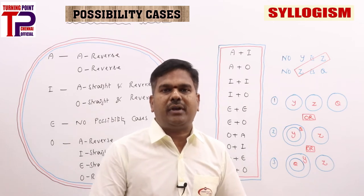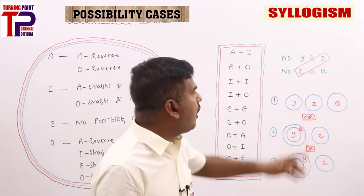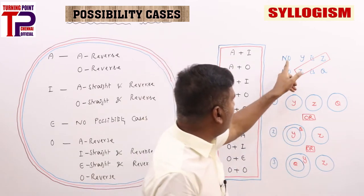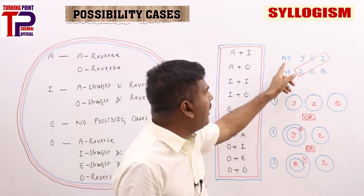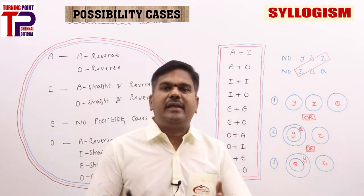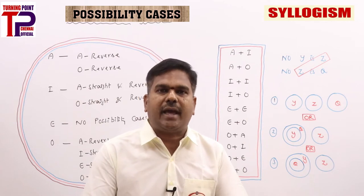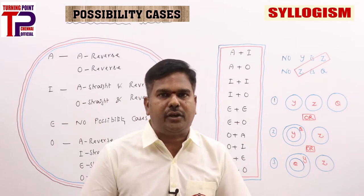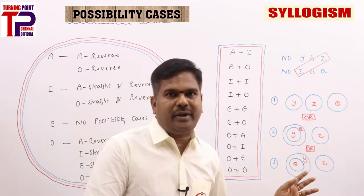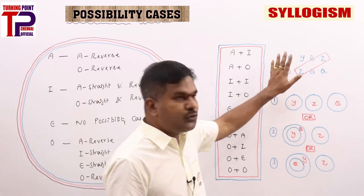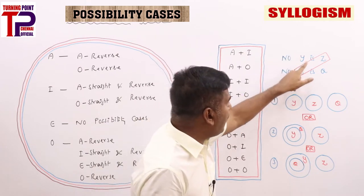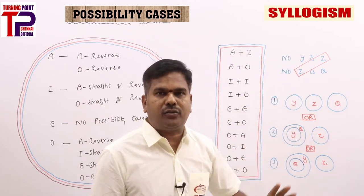You might ask: for E statement there is no possibility — how can this be? Whenever separately an E statement is given like 'no Y is Z,' you cannot take Y and Z under possibility cases because E can be converted into E, and E is directly implied by O. But here the situation is different — E plus E is there, so all Y is Q being a possibility: yes, it follows.